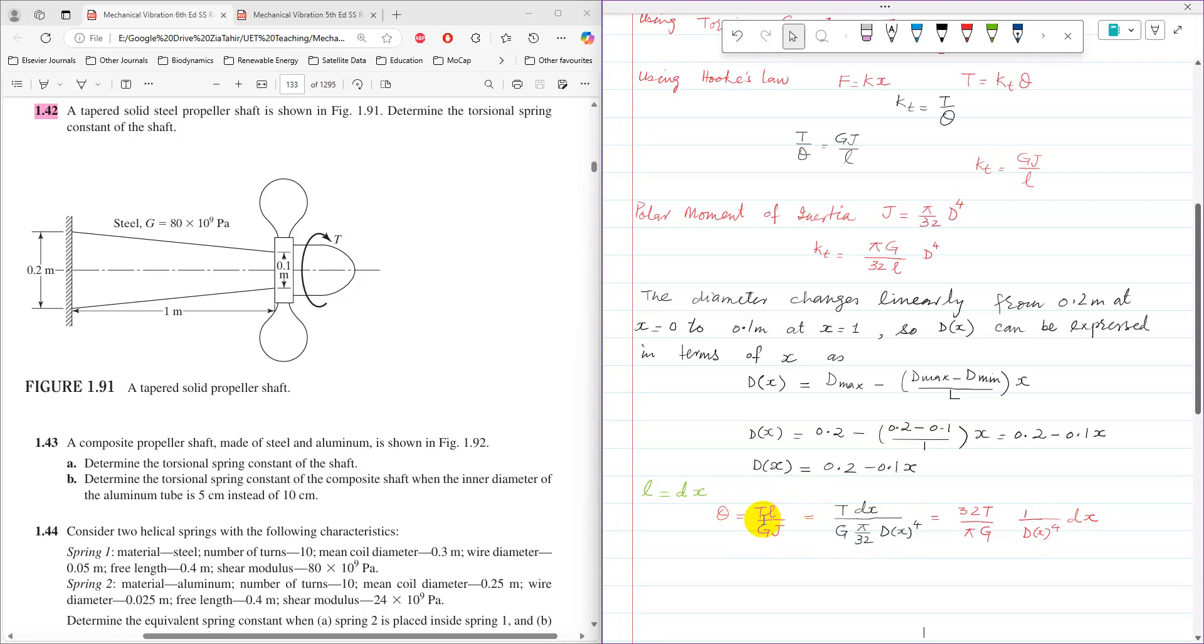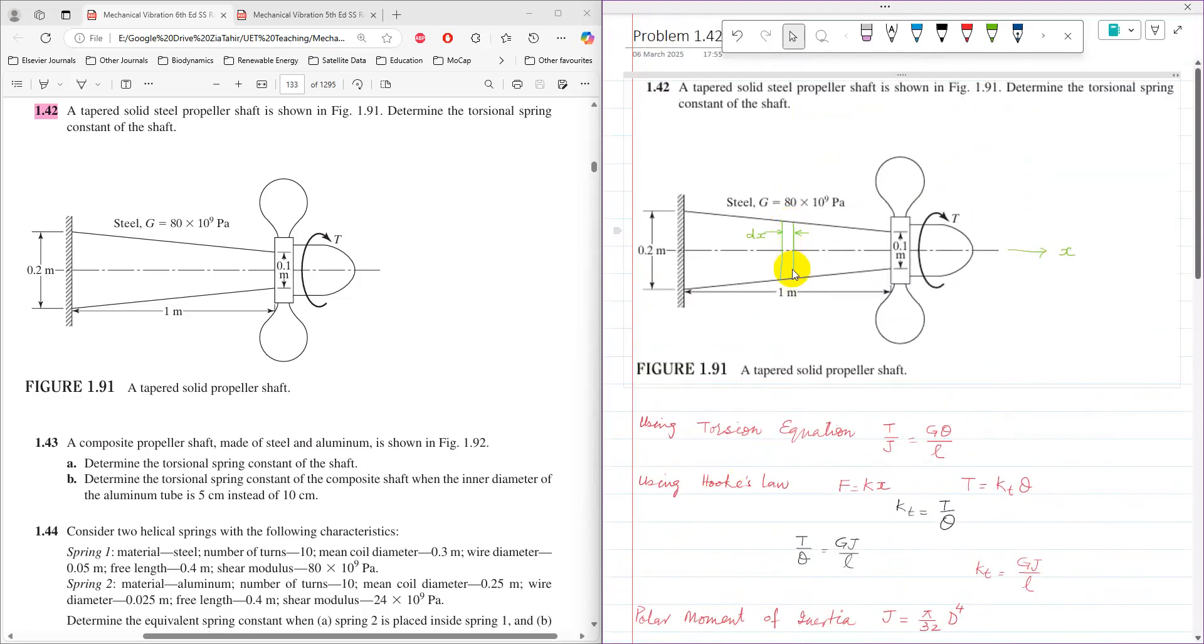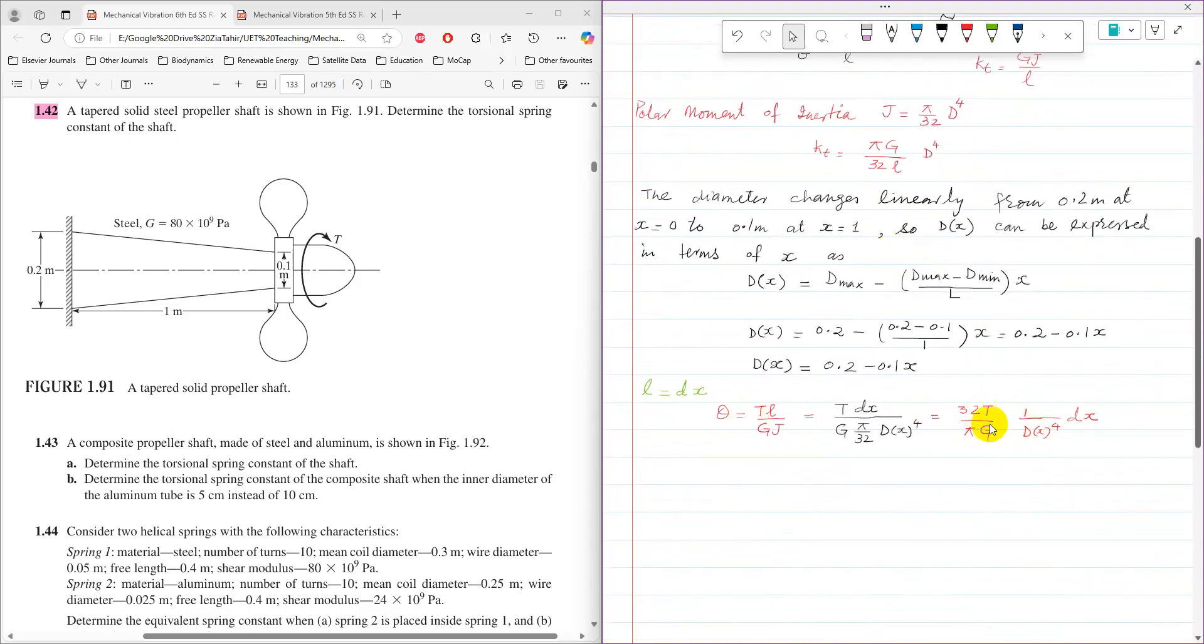So now to find out, this is theta at this small section which we have, the segment which we have considered here. But if you have to find out theta over the entire length, then we have to integrate this expression of theta over total length.